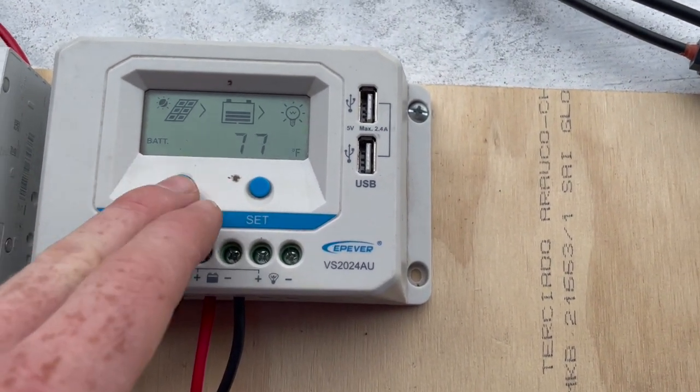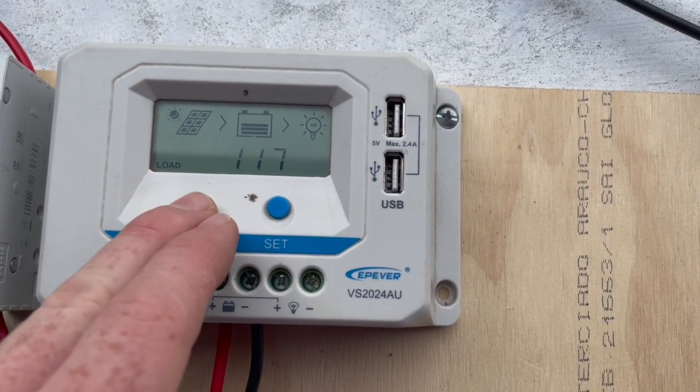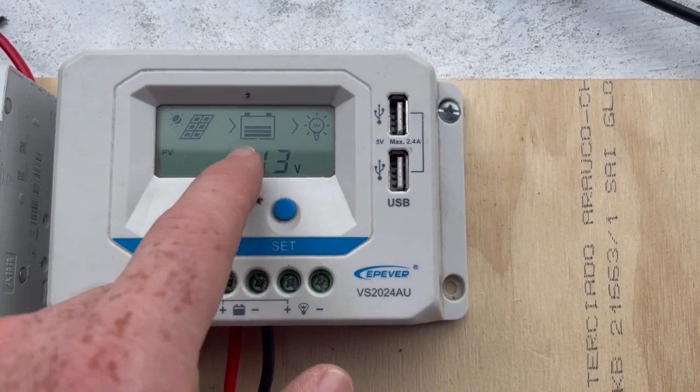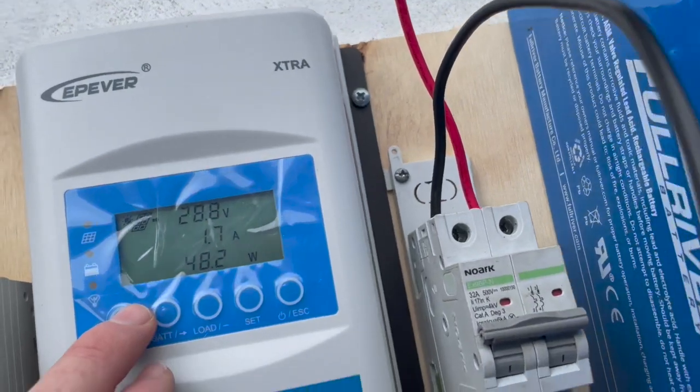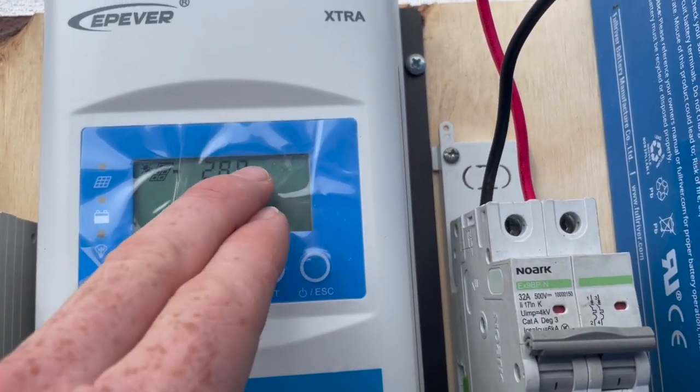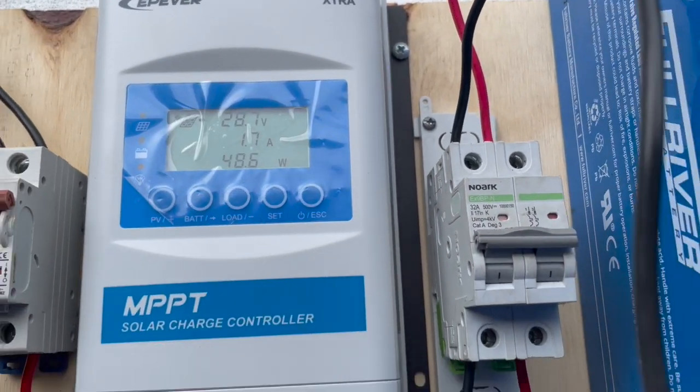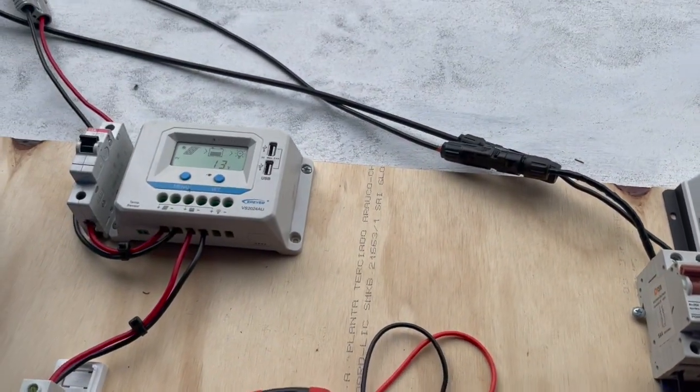However, you'll see that the solar panel PV is 13 volts on this one. This solar panel PV is 28.8 volts, and that is the difference between the two.